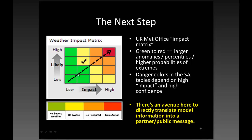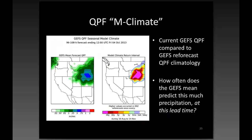One of the ways to translate this information is to look at what the UK Met Office is doing. They use a weather impact matrix where impact is increasing from left to right and likelihood or confidence is increasing from bottom to top. You can think of this as colors of standardized anomaly — when you see very large departures between the ensemble mean and climatology, it takes a combination of impact and confidence. When you do see these big values, that's your danger area: high impact, high confidence. There's really a way to directly translate model information into a partner or public message — not automatically, but as an avenue to use ensemble information better to craft a message and extend lead times.